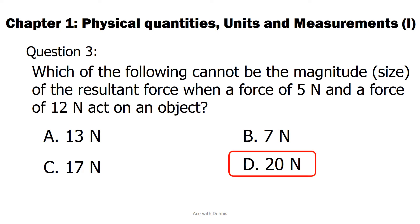The answer is D. 20 newtons. When the two forces act on an object, they may be in opposite direction, which gives minimum resultant force of 7 newtons. They may also be in the same direction, which gives maximum resultant force of 17 newtons. The resultant force cannot be out of the range of 7 to 17 newtons.